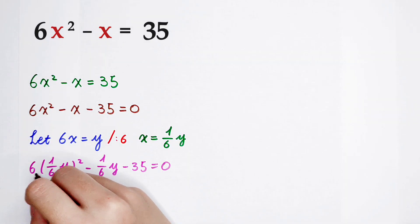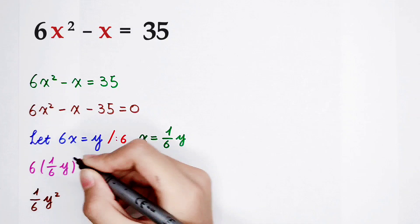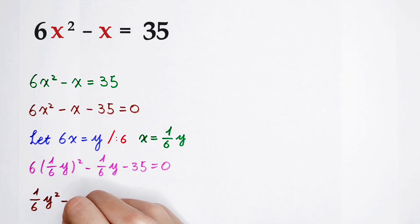6 times 1/6 cancels out, so we have 1/6 times y squared, minus 1/6 times y, minus 35 equals 0. Next step.